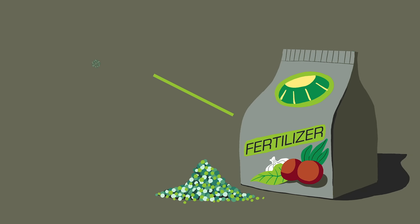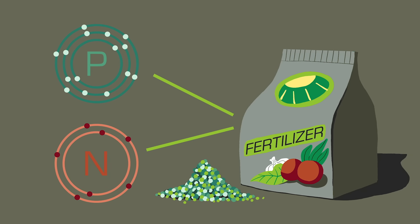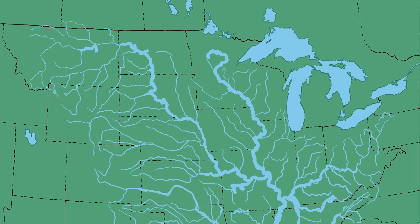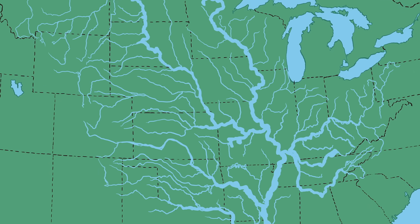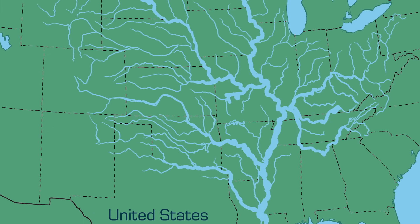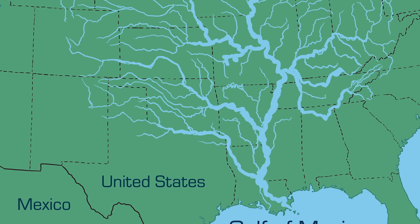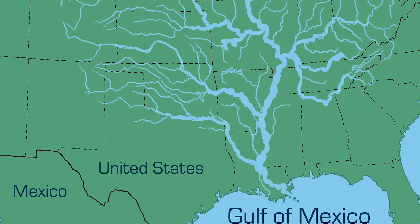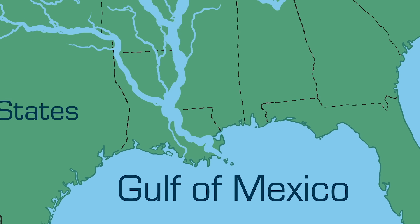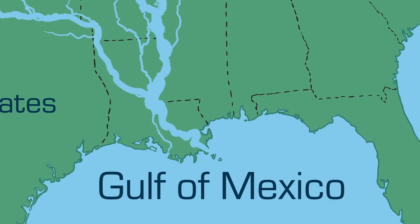The Gulf of Mexico is one of the largest dumping zones on earth for one particular pollutant: fertilizer. American agriculture relies heavily on nitrogen and phosphate-based fertilizers. Thirty-one states, including America's top agricultural producers, are connected to the Mississippi River Basin, and all of their runoff drains into the Gulf of Mexico.